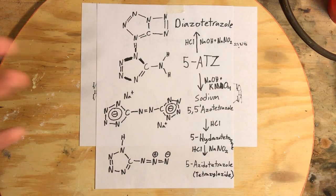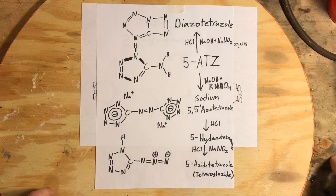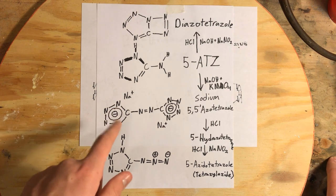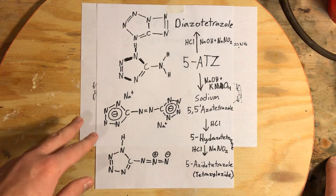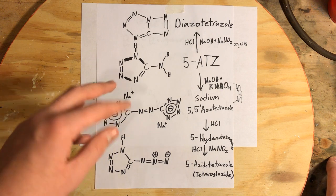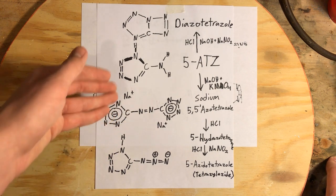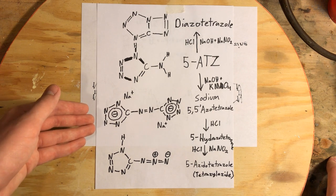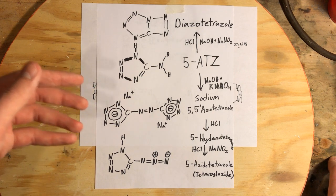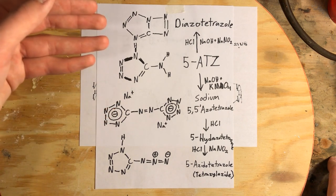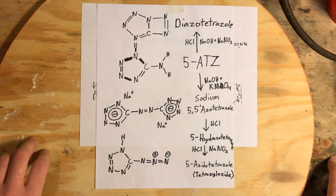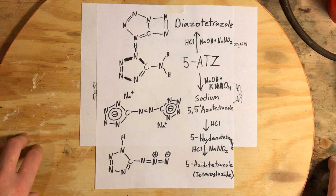So first we have sodium-5,5-azotetrazole. Many people have made videos on this, and this compound acts very similarly to the nitrotetrazoles in terms of brisance. We could make the silver salt of this, and I'm sure that would be very explosive, similar to the silver salt of nitrotetrazole.